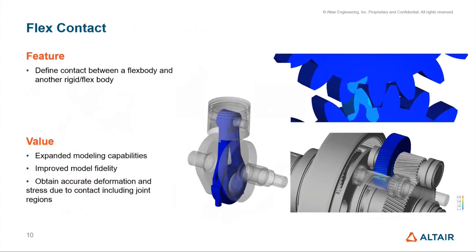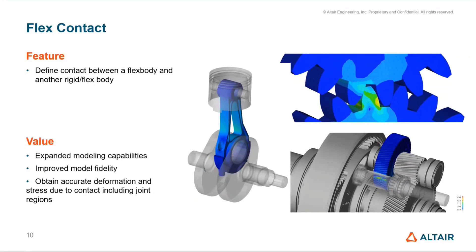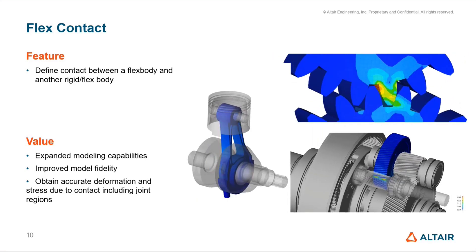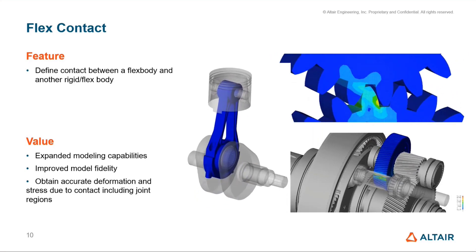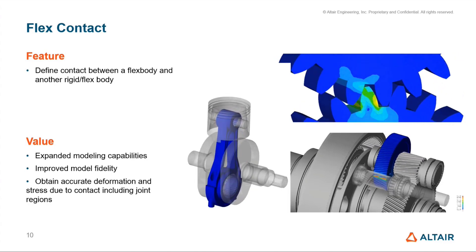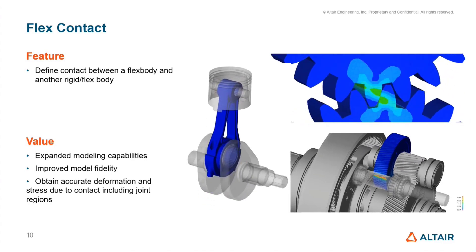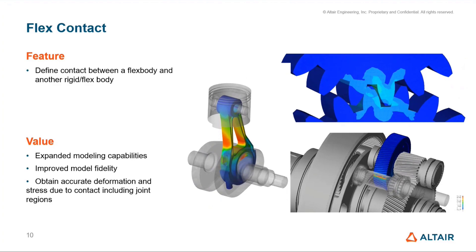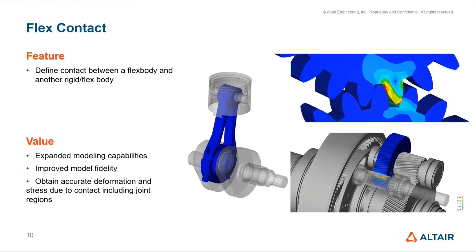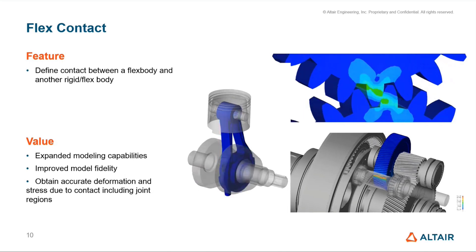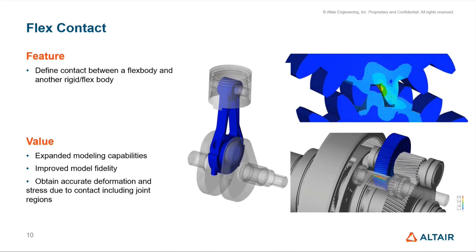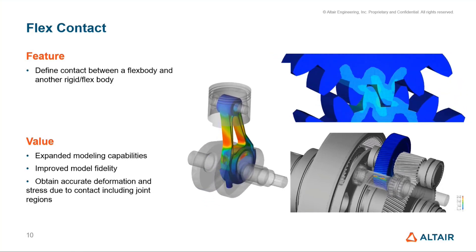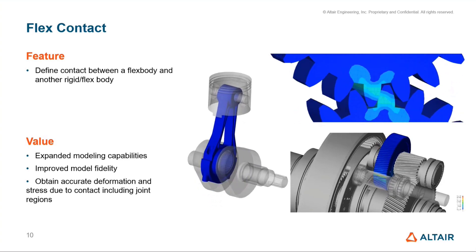The feature that many of us have been waiting for is finally available — the ability for flexible bodies to be in contact. From this release, it is possible to define and solve contact between a FlexBody and another rigid or a FlexBody. The model will have better fidelity; you can get more accurate deformation and results due to contacts factored in with the flexing body. This feature is available in both Motion View and Inspire Motion.